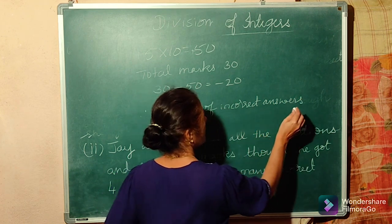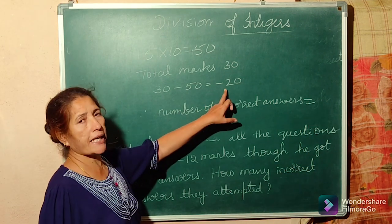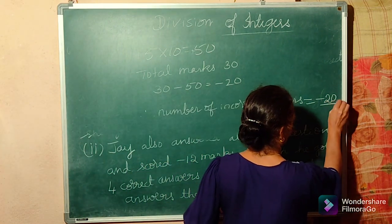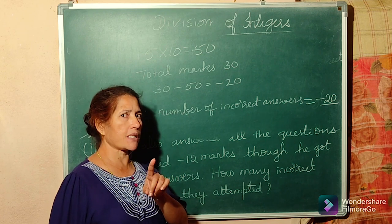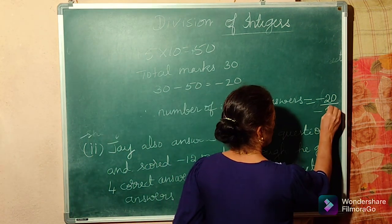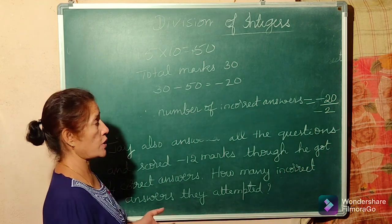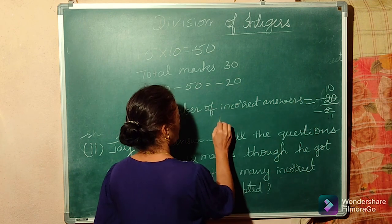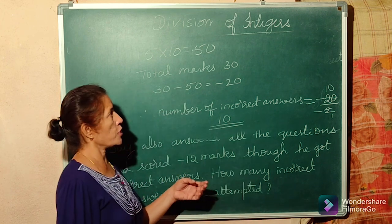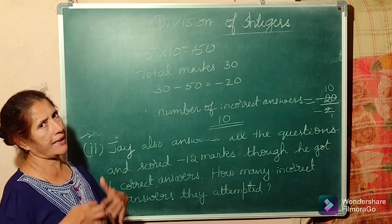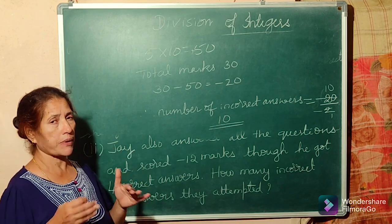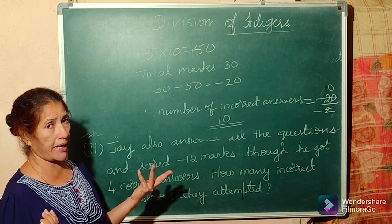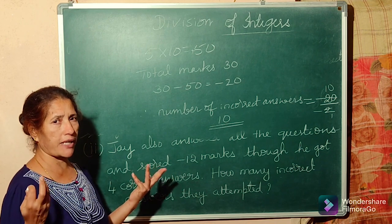Can you tell me: totally how many marks were deducted for incorrect answers? Minus 20. For every incorrect answer, what is the mark? Minus 2. So minus 20 divided by minus 2 — minus divided by minus is plus — equals 10. So Radhika had 10 incorrect answers. Let us verify: 10 correct answers gives 50 marks, 10 incorrect answers gives minus 20, so 50 minus 20 equals 30. Correct!